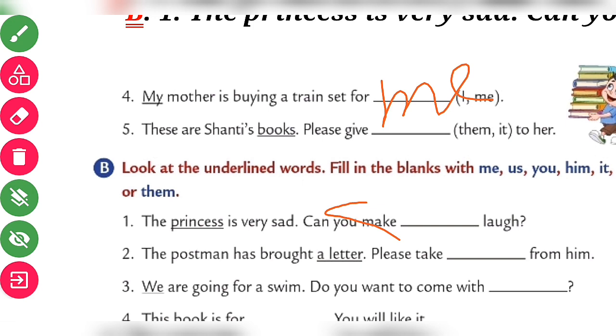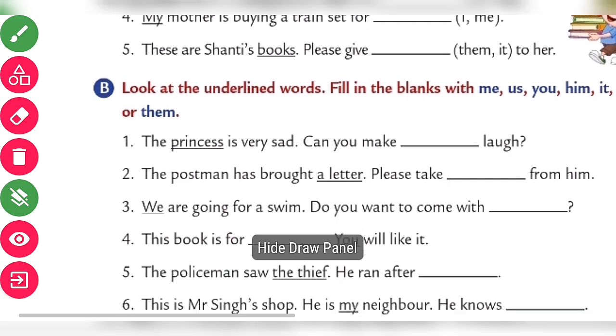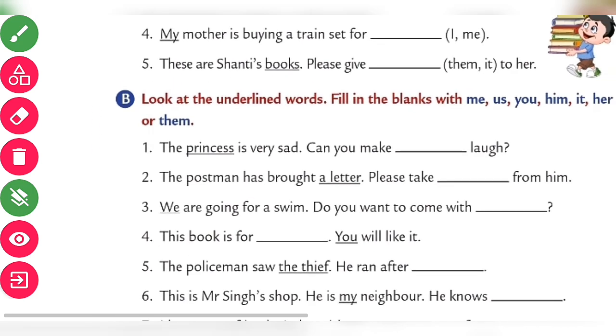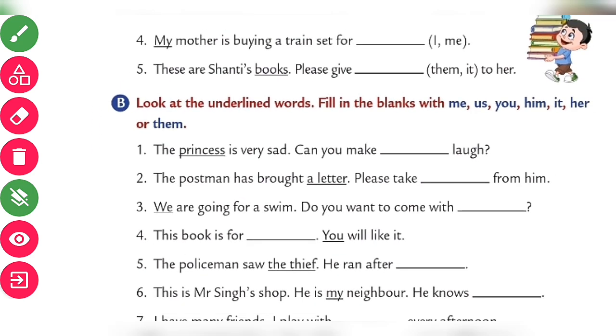Next: 'My mother is buying a train set for me.' Then: 'These are Shanty's books, please give them' — because 'books' is plural, the answer is 'them.'